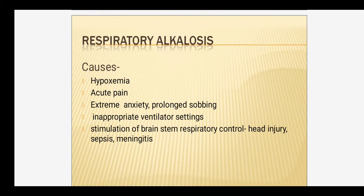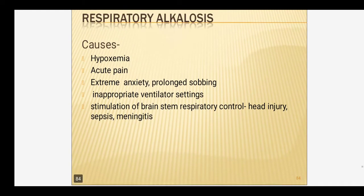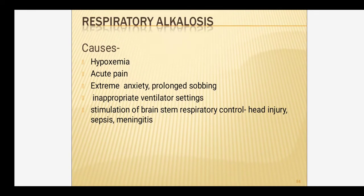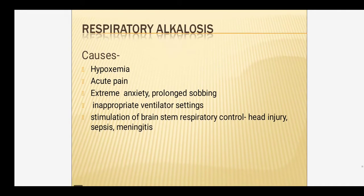Next is respiratory alkalosis. The causes are hypoxemia, acute pain, extreme anxiety, extreme or prolonged crying and sobbing, improper ventilator settings causing excess artificial ventilation, and some conditions such as head injury, sepsis, and meningitis which stimulate the brainstem, causing hyperpnea.